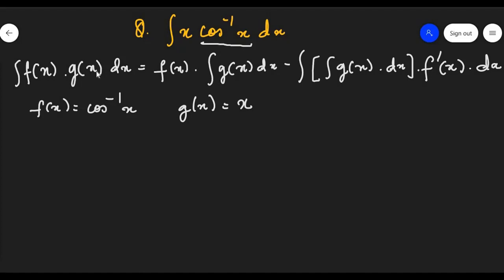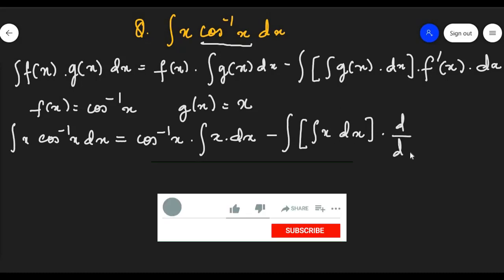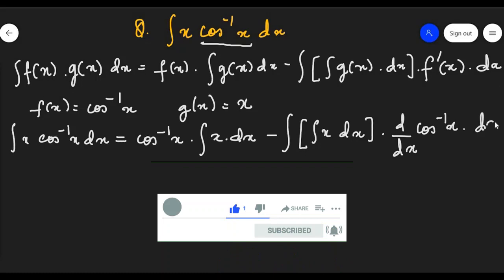Now let us put the values in the formula and work the solution. You get integration of x cos inverse x dx equal to the first function, that is cos inverse x, into integration of g(x). G(x) is x, so integration of x dx, minus integration of [integration of x dx] into d/dx — that is differentiation of cos inverse x — dx.